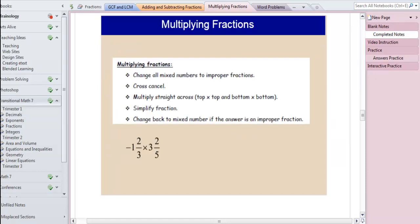So here I'll recap the important rules. We want to make sure that you change all mixed numbers to improper fractions. Then you want to cross-cancel if at all possible. Then multiply straight across, numerator times numerator, denominator times denominator. Simplify your fraction if necessary and then change back to a mixed number if necessary.